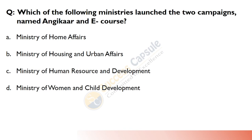Which of the following ministries launched two campaigns named 'Angi Kaar' and 'E Course'? This is the Ministry of Housing and Urban Affairs. The campaign is for behavioural change, and the E Course is on the Vulnerability Atlas of India.